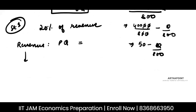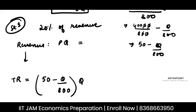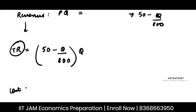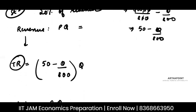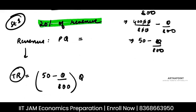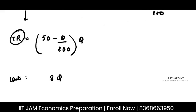So revenue will be price into quantity: (50 − Q/800) × Q. My cost is 8 per unit, so 8Q. But in situation 1, I am giving 20% of the revenue, so that also has to be part of the cost. Whatever you are giving to the singer is also a cost for your company. So there is an additional cost which is 20% of the revenue.